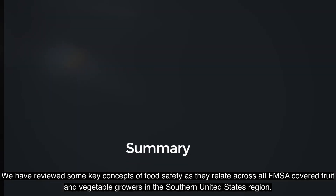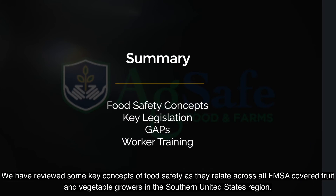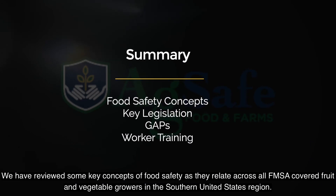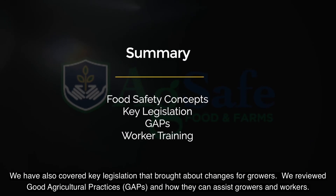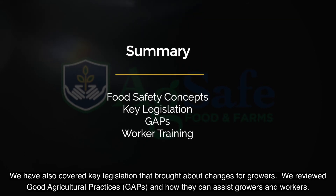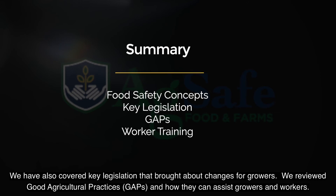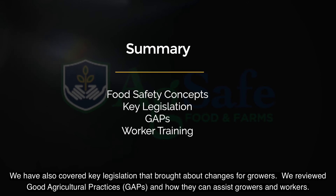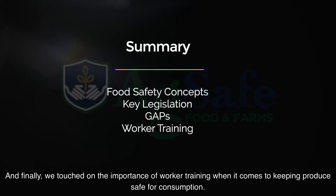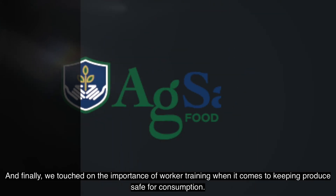We have reviewed some key concepts of food safety as they relate across all FSMA-covered fruit and vegetable growers in the southern United States region. We have also covered key legislation that brought about changes for growers. We reviewed Good Agricultural Practices (GAPs) and how they can assist growers and workers. Finally, we touched on the importance of worker training when it comes to keeping produce safe for consumption.